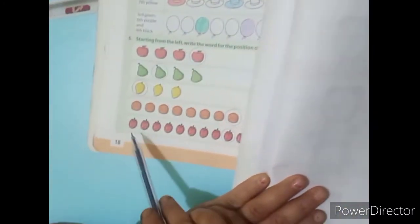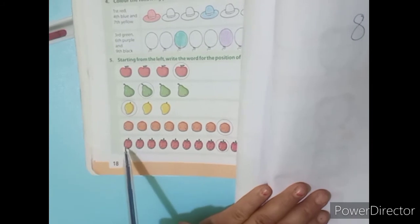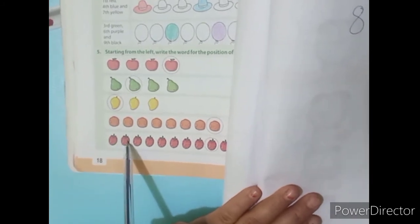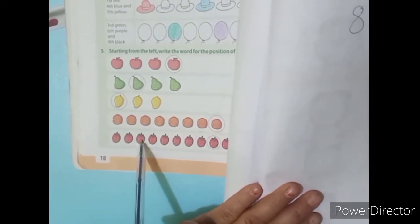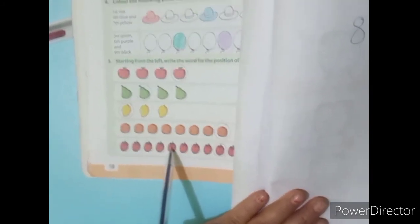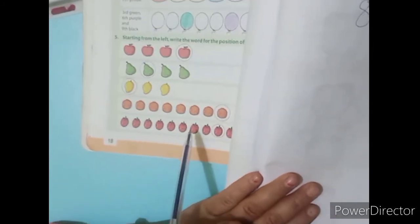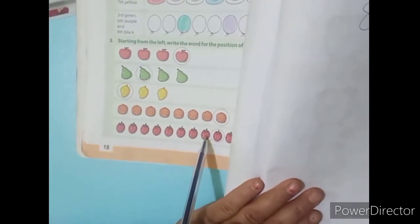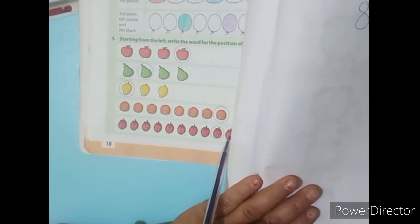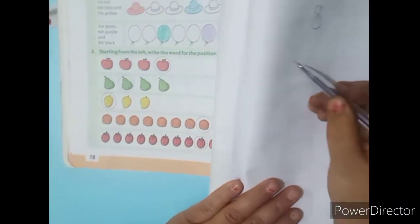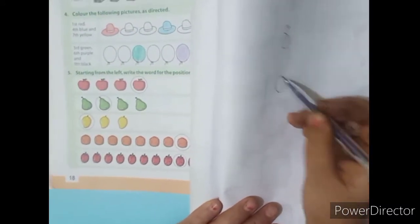Now your next number — what is this? This is a strawberry. How many strawberries are here? Count it: one, two, three, four, five, six, seven, eight, nine, ten. Now you have to write ten.